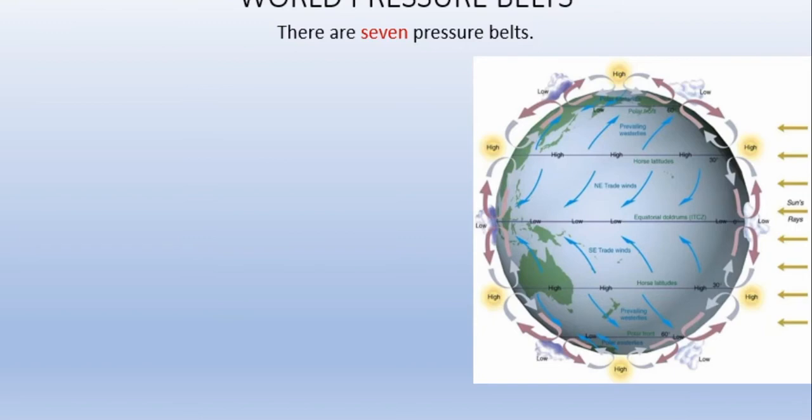The equatorial low pressure belt is also known as the doldrums, extending from about 5 degrees north to 10 degrees north and 5 degrees south to 10 degrees south due to pressure belt variations. The equatorial low pressure belt belongs approximately to 5 to 10 degrees north and south.